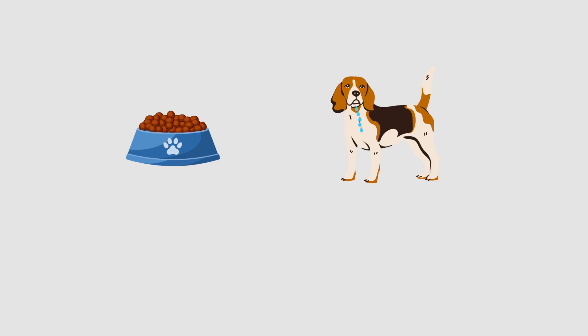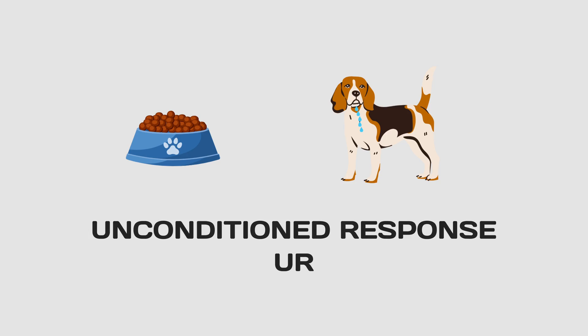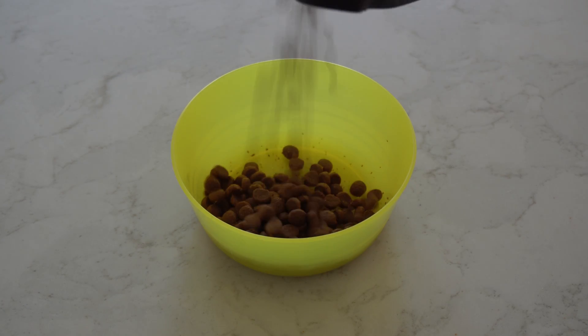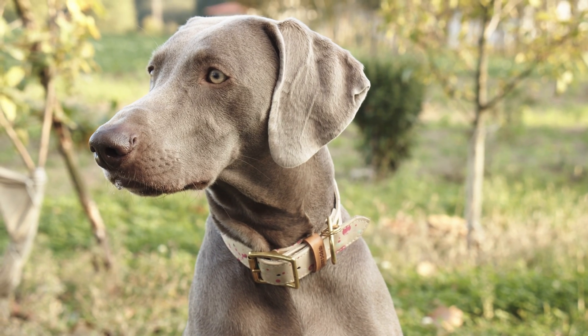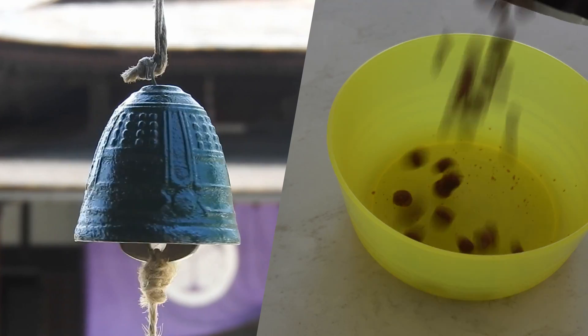The salivation triggered by the bell alone became the conditioned response, or CR. Importantly, the dog's natural salivation in response to the food, before any conditioning, is termed the unconditioned response, or UR. In essence, classical conditioning involves taking a neutral stimulus, like the bell, and pairing it with something that instinctively elicits a response, such as food. Over time, the neutral stimulus becomes a conditioned stimulus, capable of evoking a response on its own. It's a methodical process that underlies the formation of associations between stimuli.